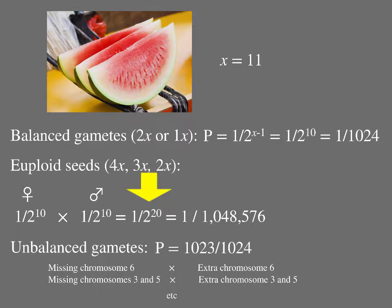the chance of two gametes that are unbalanced in complementary ways finding each other is also 1 in 2 to the 20th. So, the overall chance of either balanced or complementary unbalanced gametes finding each other is 1 in 2 to the 20th added to itself 1,024 times, or 1,024 times 1 in 1,048,576, which equals 1 in 1,024.